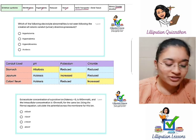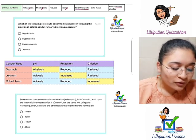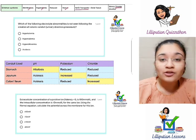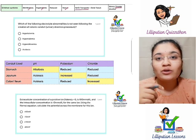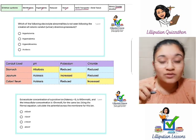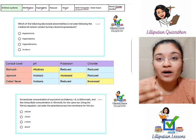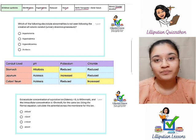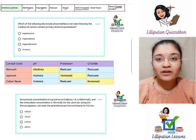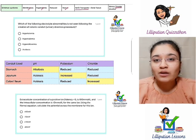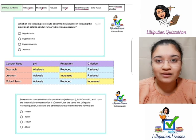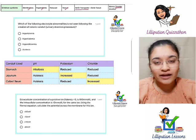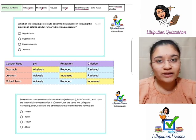Now let's move on to question 2: which of the following electrolyte abnormalities is not seen following the creation of a colonic conduit? This is a urinary diversion procedure. Urinary diversion procedures use parts of the GIT — stomach, jejunum, ileum, and colon — surgically in the urinary system. Different metabolic abnormalities tend to happen with different GIT segments because they have inherently different acidic and alkaline environments.